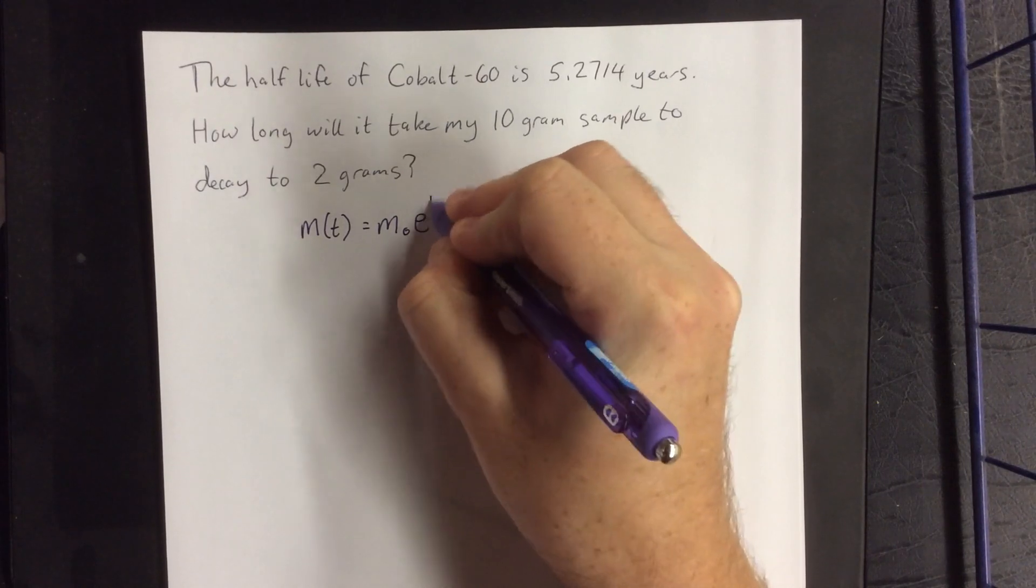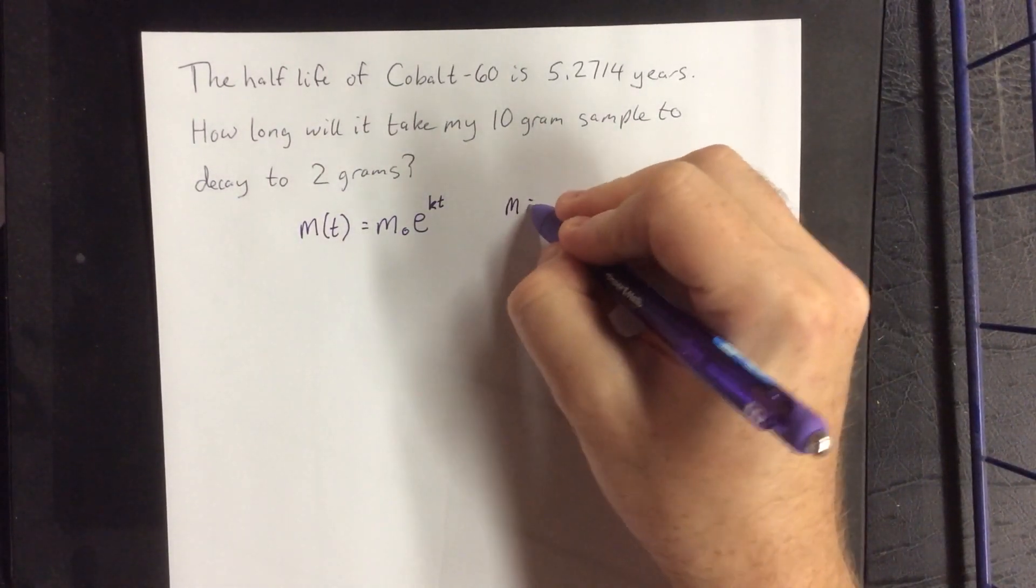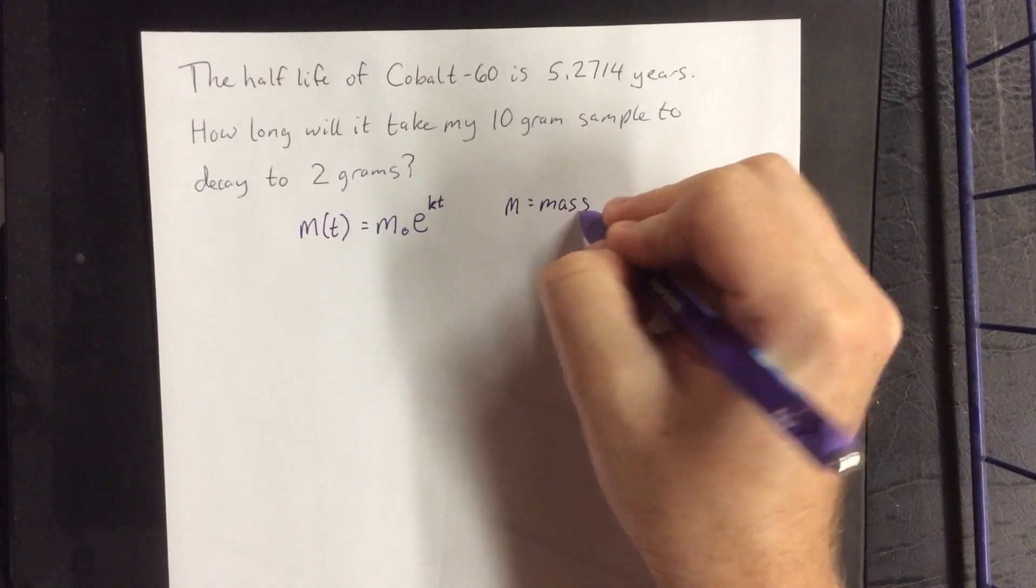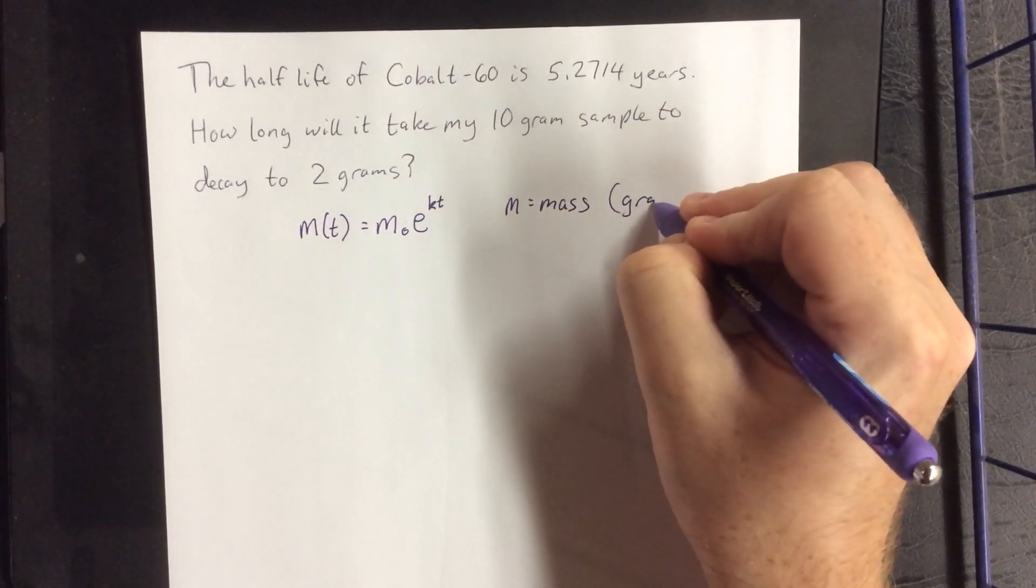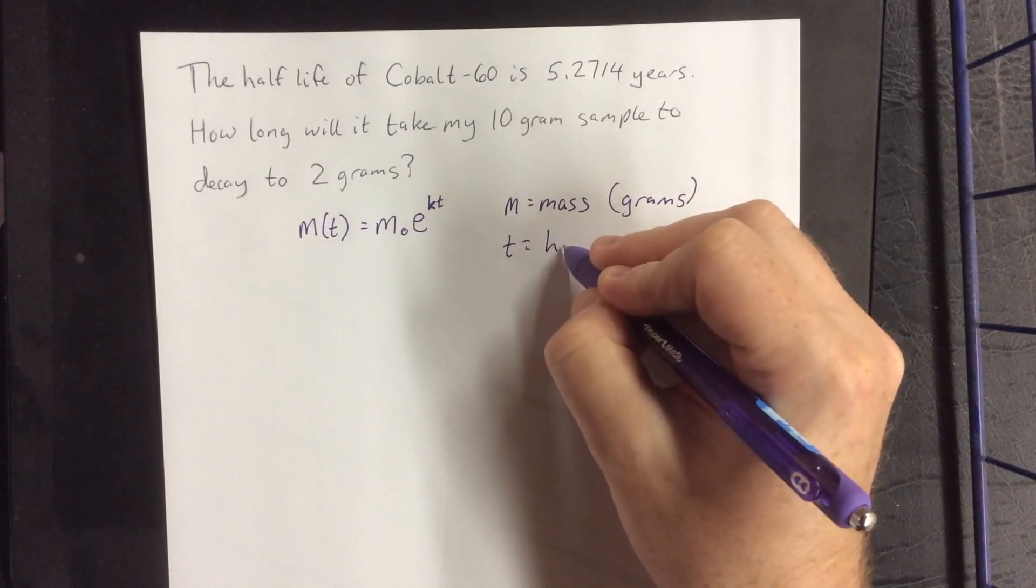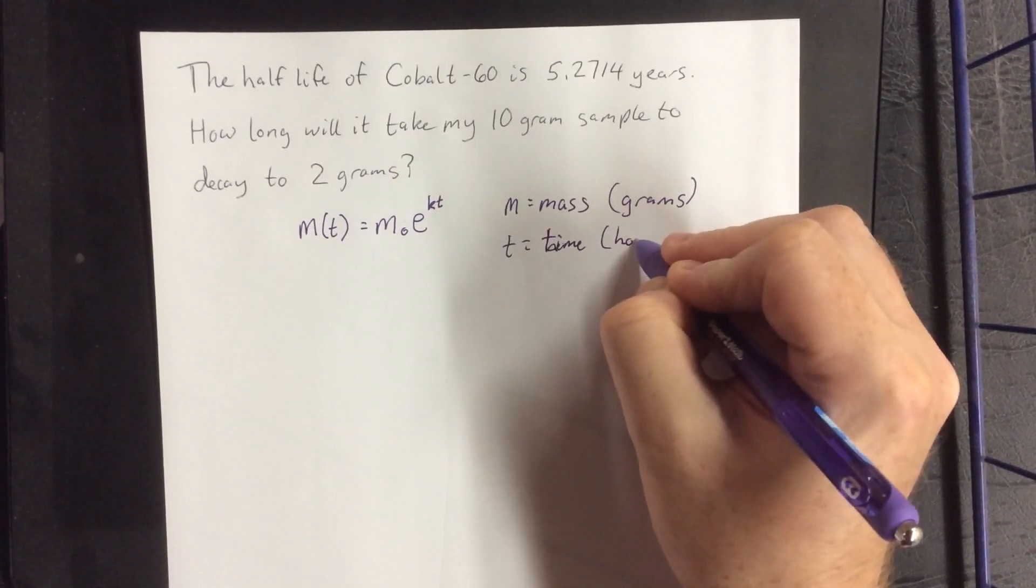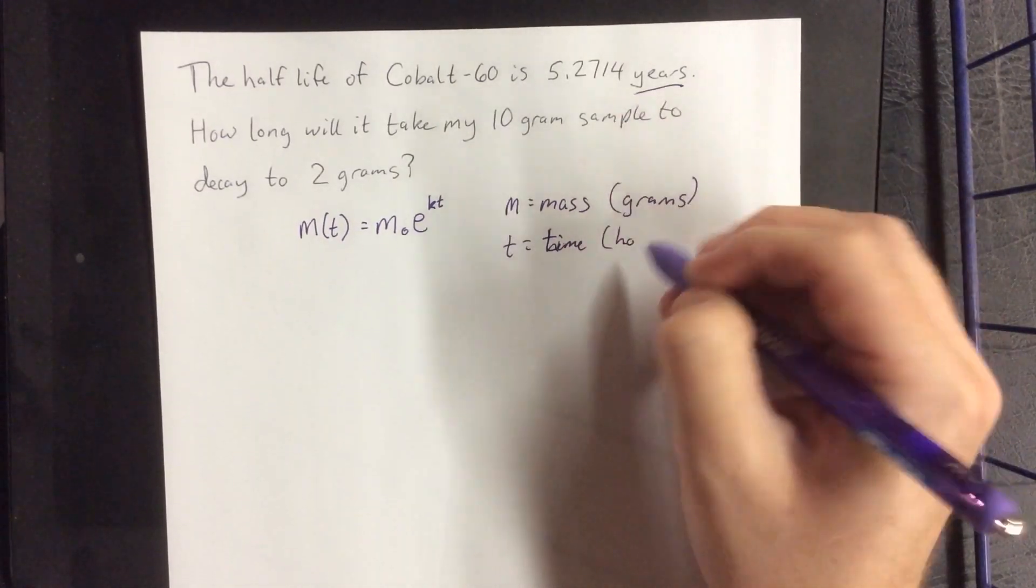So because we're dealing with a mass, I am going to be using a function name m for mass. So m is referring to mass, and we'll put that in terms of grams, and then t. We'll put this in terms of hours, or t will be time measured in hours, wait, years.